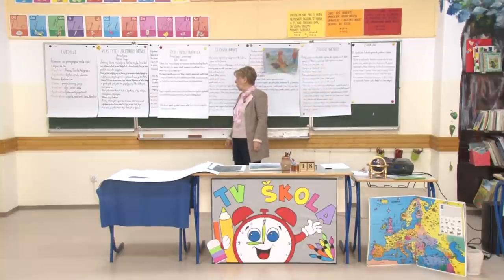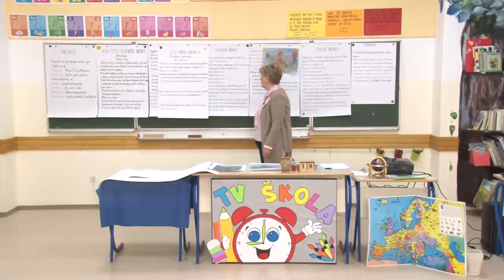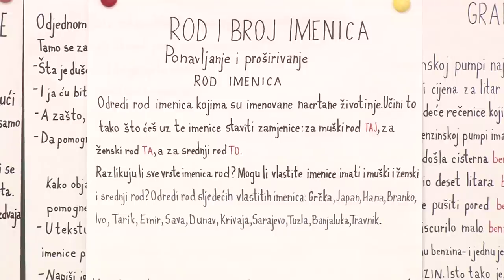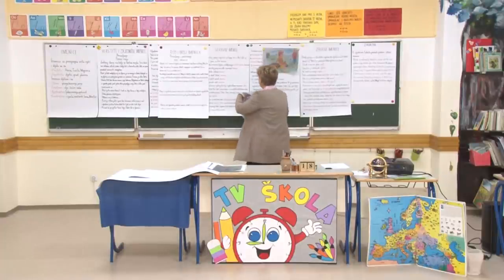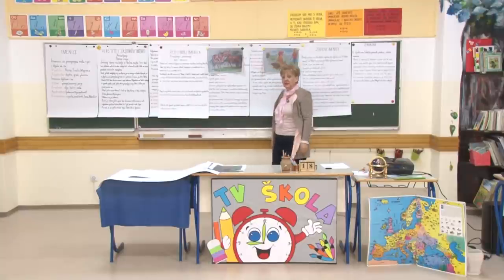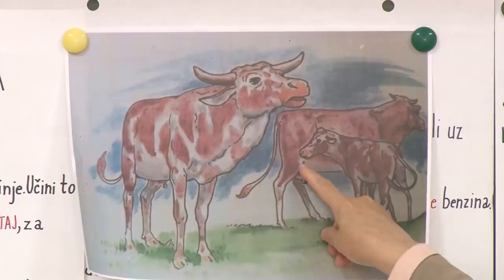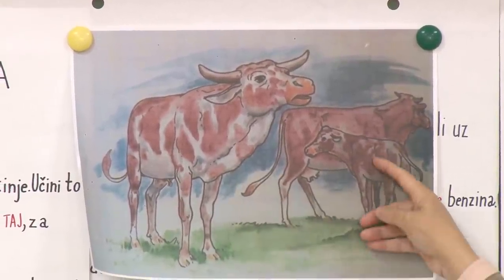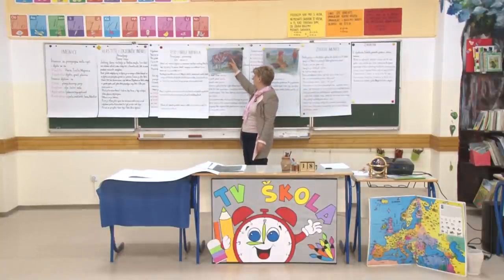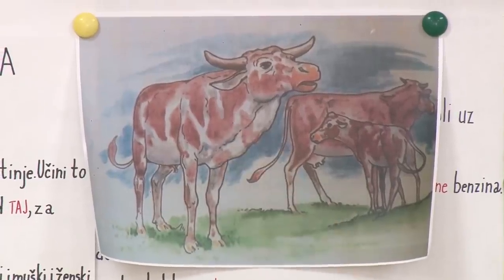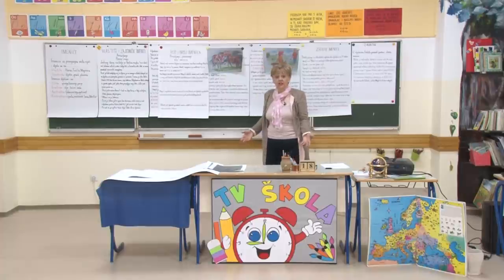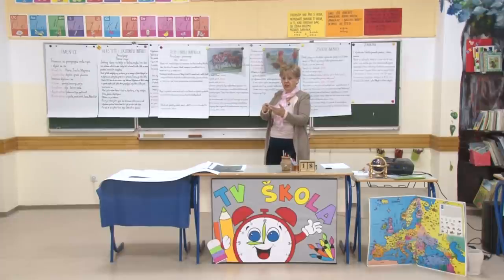Rod i broj imenica. Ponovo ću reći - imenice sad ponavljamo, sve ono što smo radili tokom sve četiri godine, a u petom razredu najviše. Odredi rod i broj imenica kojima su imenovane nacrtane životinje. Učiniti to tako što ćeš uz imenice staviti zamjenice: za muški rod - taj, za ženski - ta, a za srednji - to. Razlikuju se tri vrste roda: muški, srednji i ženski. Uvijek znamo na osnovu pokazne zamjenice ispred.